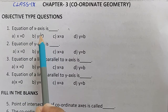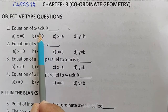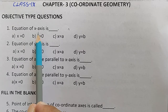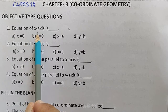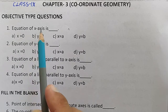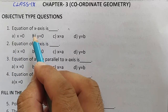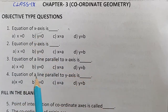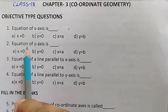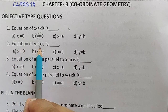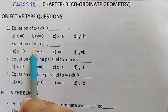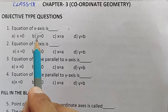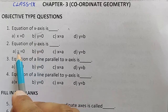On x-axis the value of y is always 0, so the equation of x-axis is y = 0. Similarly, on y-axis the value of x is always 0, so the equation of y-axis is x = 0.